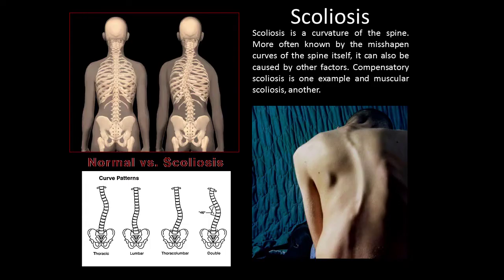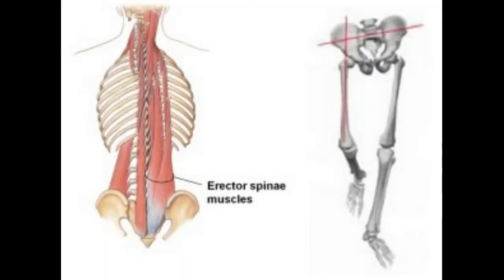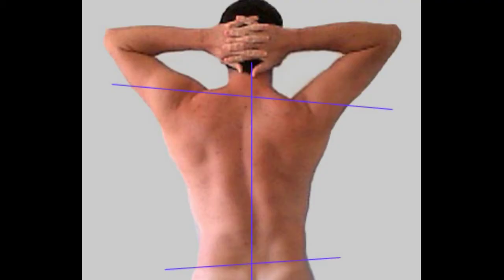Scoliosis is a curvature of the spine, more often known by the misshapen or over-accentuated curves of the spine that those who are afflicted are usually born with. However, it can be caused by other factors — compensatory scoliosis and muscular scoliosis are examples. Postural misalignments from injuries, compensation, or bad postural habits can lead to the misshaping of spinal vertebrae, becoming a permanent change in the structure of the spine.